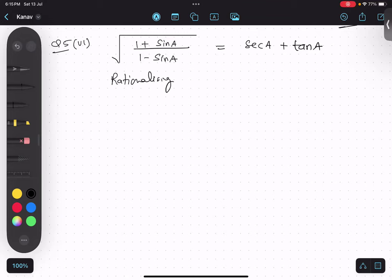So rationalizing. It is in root, don't get confused, keep it in root. One plus sine A upon one minus sine A, multiply one plus sine A upon one plus sine A.